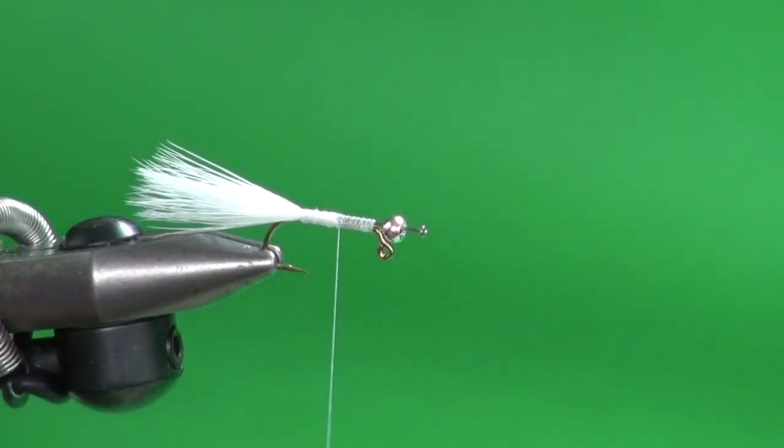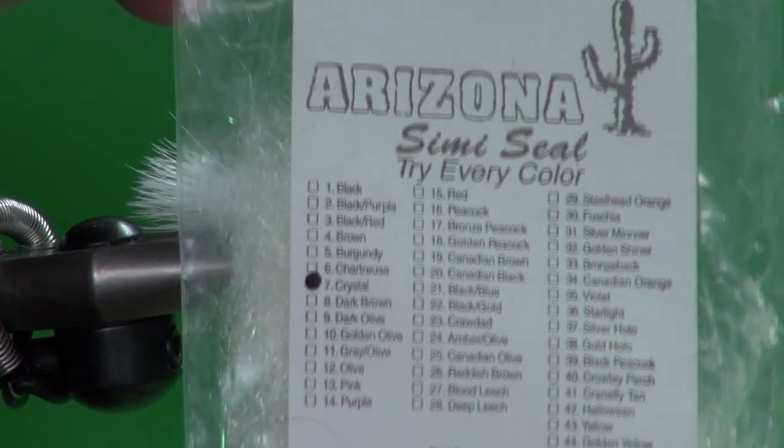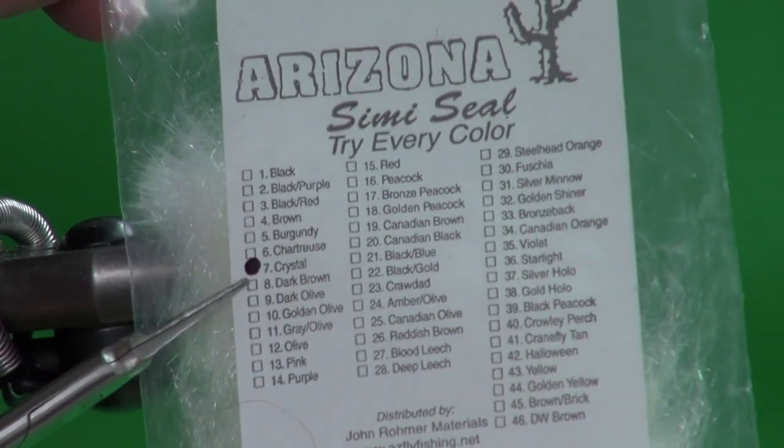This fly is not complicated. We've got that all tied in right at the base of the pin here, at the point back, and it just evens out our shank along here so it makes our body nice and even. So for the body we're just going to use some Arizona semi seal in color number seven crystal.